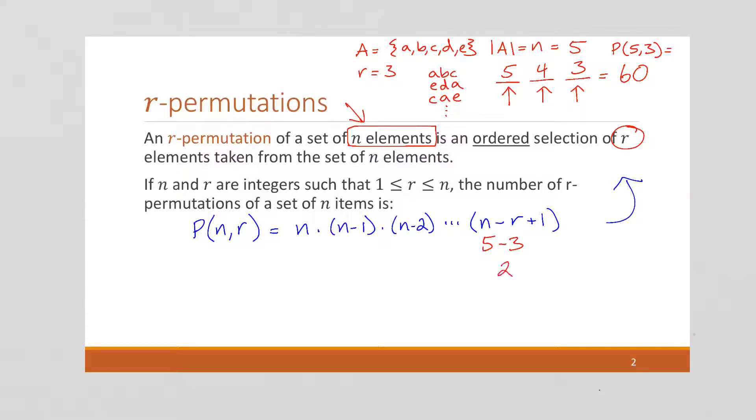5 minus 3 gives us 2, and then we pull that plus 1 down, and we get 3, which is exactly what we saw in this third spot. That's the last number, so that's going to be the last number in our product.